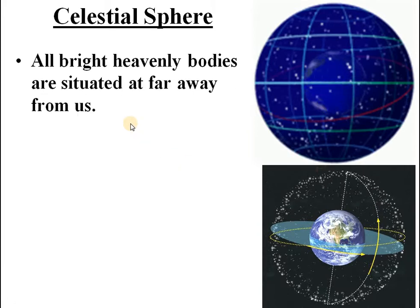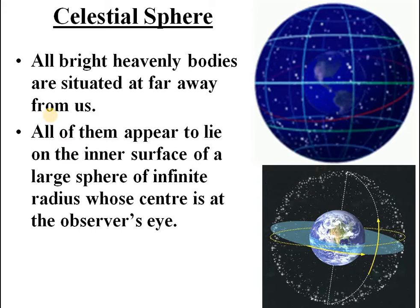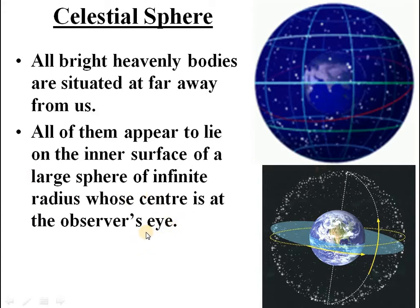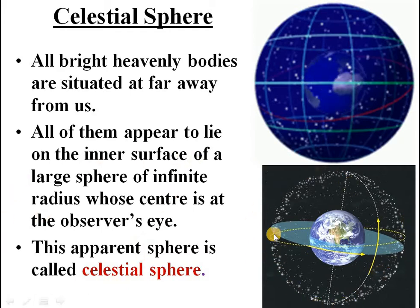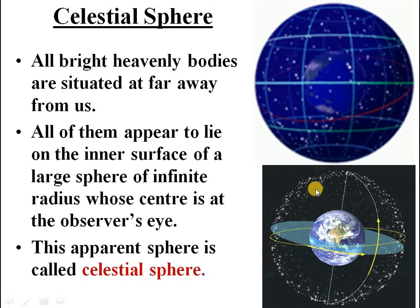In figure 2, you can see some shining objects — it is a visual artistic impression of the celestial sphere. At the centre you have the earth, and all other objects seem to be existing on a spherical surface. That spherical surface is called a celestial sphere. All bright heavenly bodies are situated far away from us, but all of them appear to lie on the inner surface of a large sphere of infinite radius. The centre is at the observer's eye. That apparent or imaginary sphere is called the celestial sphere. This concept is very helpful in locating objects in space.